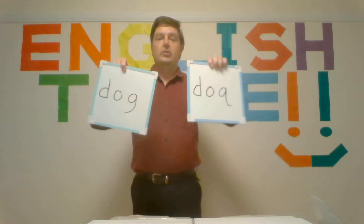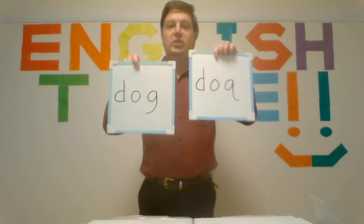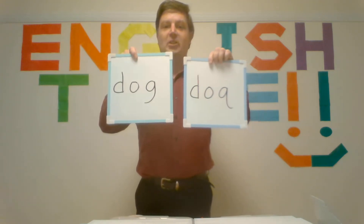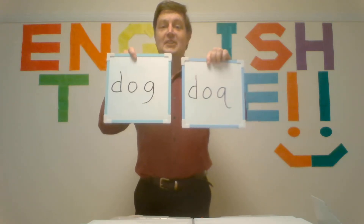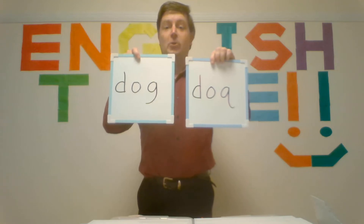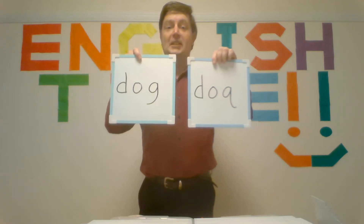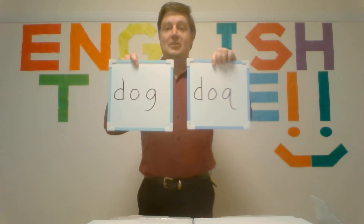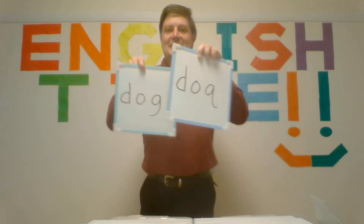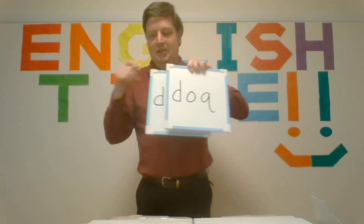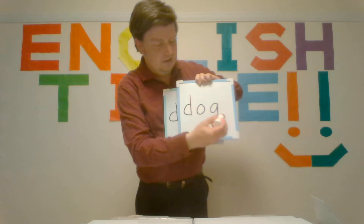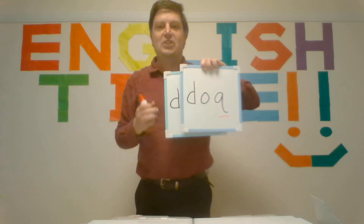Dog. Which is correct? Dog. Five seconds. Five, four, three, two, one. The answer? Dog. Here, you have a Q. You want a G. So, D-O-G. Dog.